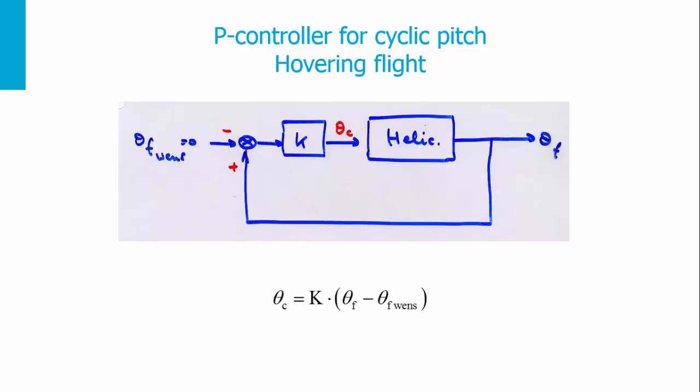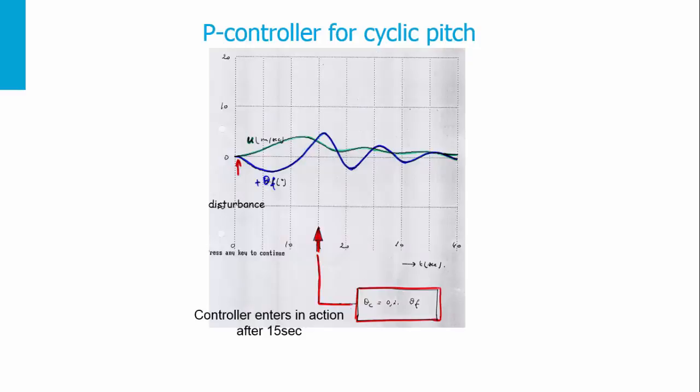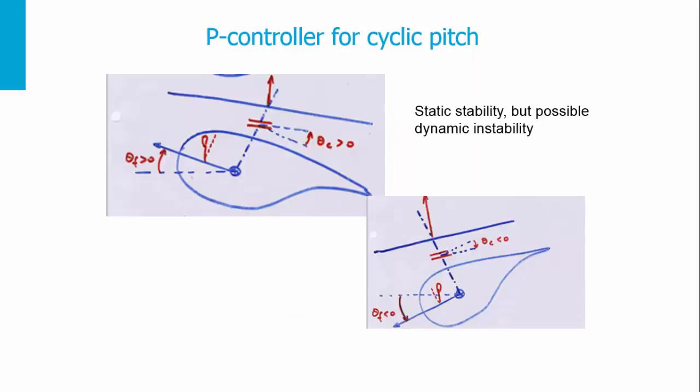The helicopter model outputs the pitch attitude, which feeds back to the initial reference value so we know the error to be corrected. If we apply this PID controller — for example, entering action after 15 seconds — we see that U and theta F go to a stable value, meaning the PID controller is stabilizing the helicopter. However, we can have static stability but dynamic instability, so we oscillate around the static value.